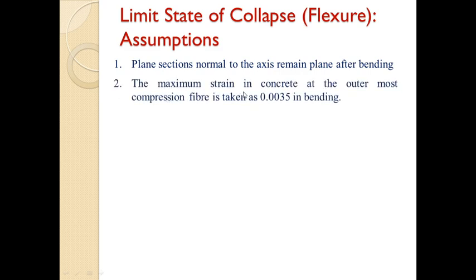The next assumption is that the maximum strain in concrete at the outermost compression fiber is taken as 0.0035 in bending. This is the defined limiting strain of concrete in bending compression, beyond which concrete will be considered as reaching the state of collapse. It is clear that the specified limiting strain of 0.0035 does not depend on the strength of concrete — it is simply the limiting or permissible strain allowed in concrete.